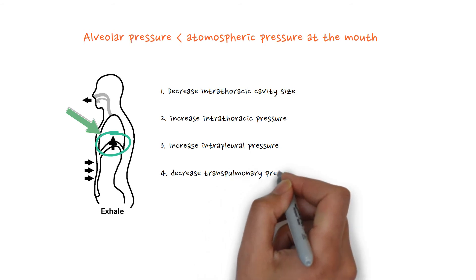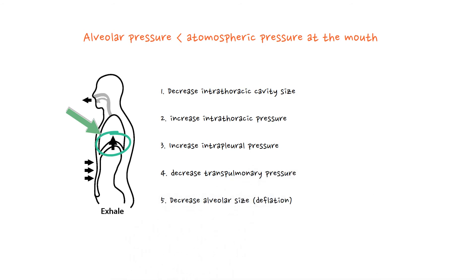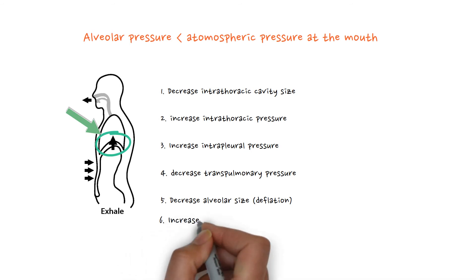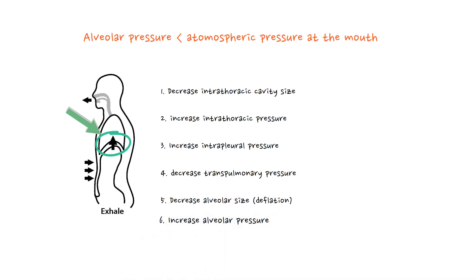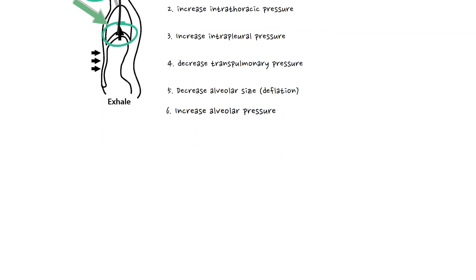The intrathoracic cavity becomes smaller, intrathoracic pressure increases, intrapleural pressure increases, and transpulmonary pressure decreases, causing alveolar size to decrease. Right before we breathe out, there is no airflow yet. The same amount of air is in the alveolus but the alveolar size has decreased, so alveolar pressure increases and becomes higher than atmospheric pressure. A pressure gradient forms and air flows out from the alveoli to the mouth.